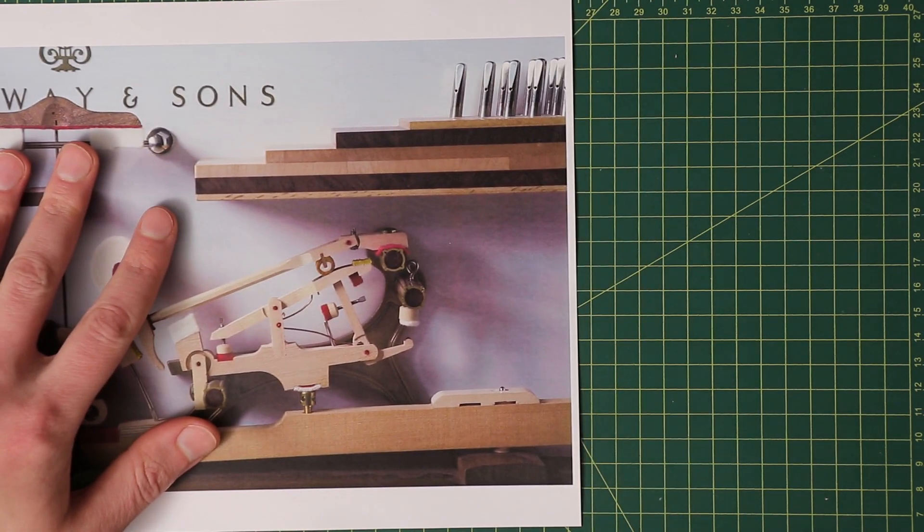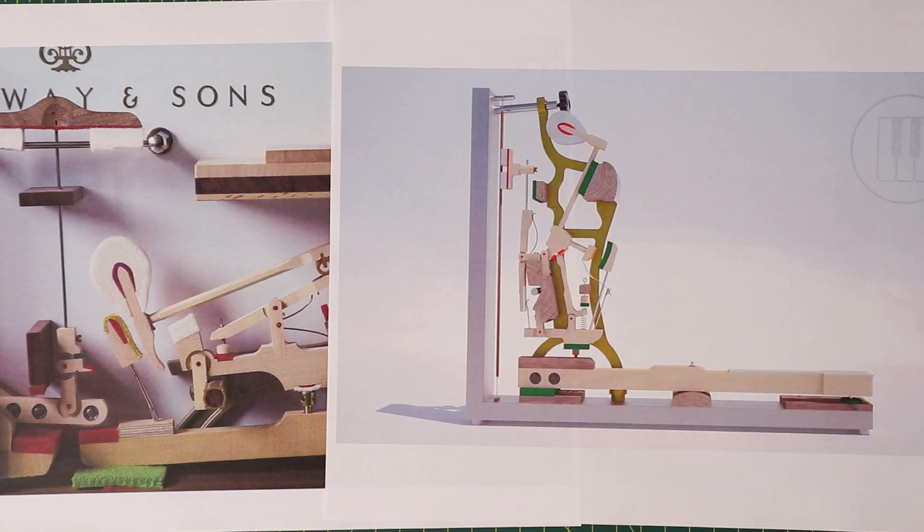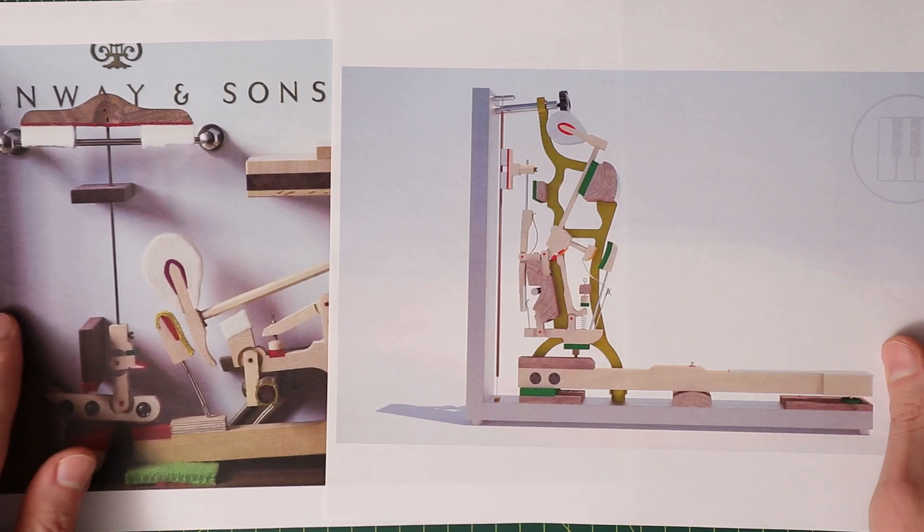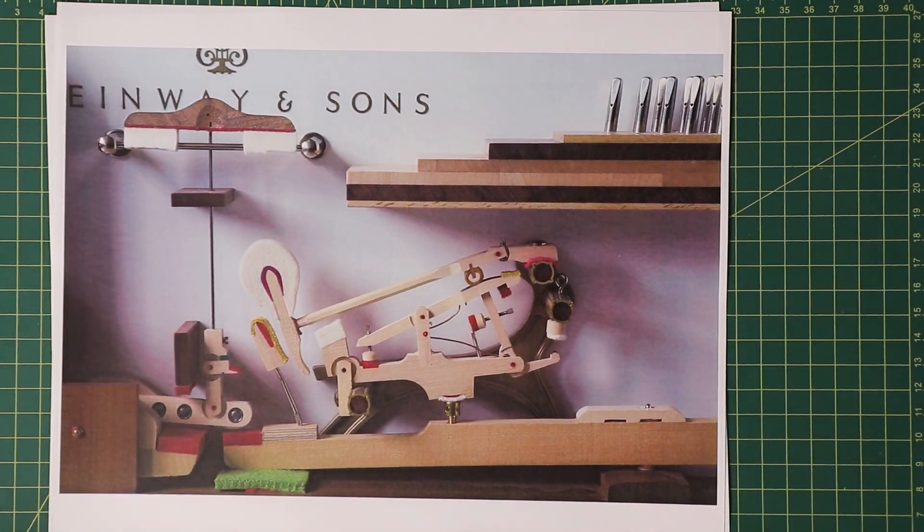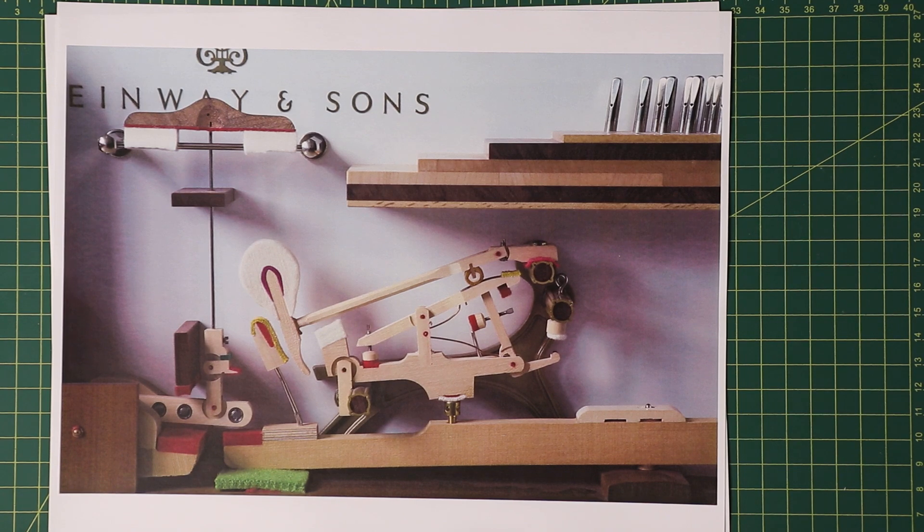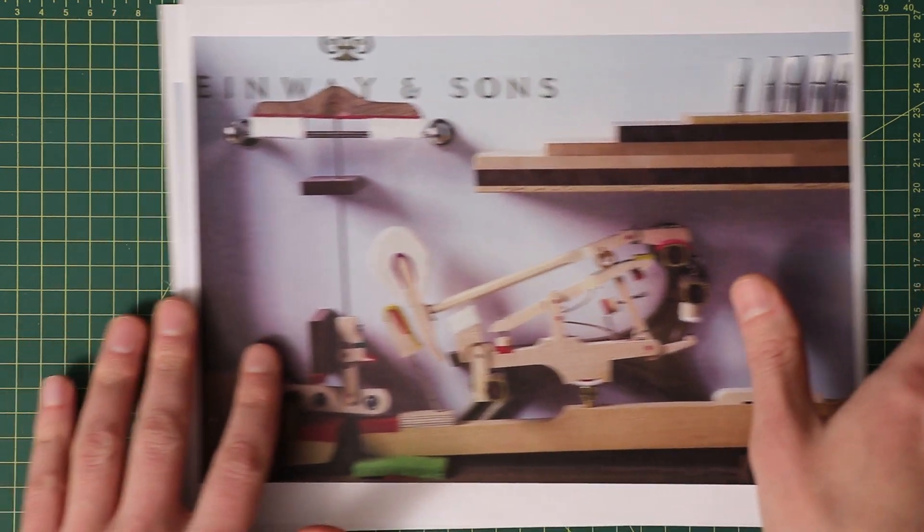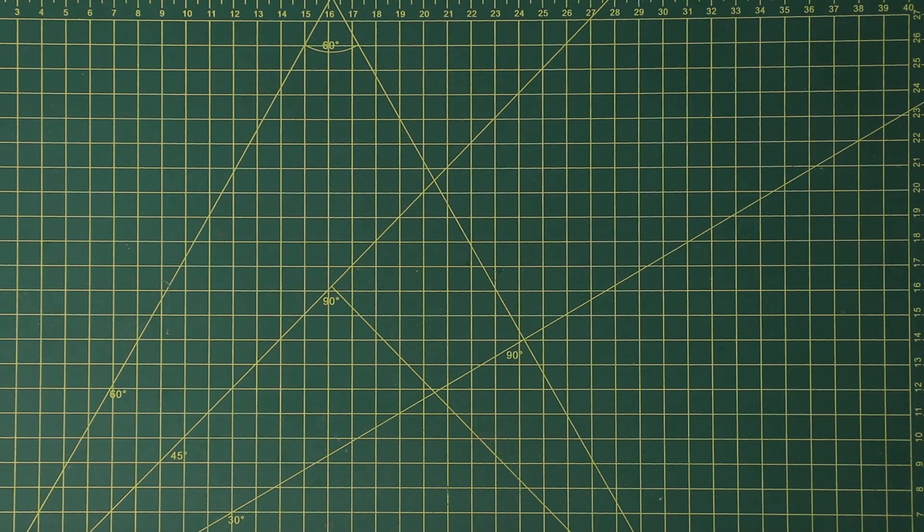With upright pianos also featuring a similar mechanism, though naturally redesigned extensively as it can no longer make use of gravity to reset the hammers. This double escapement action is also what you have in super high-end digital pianos or hybrid pianos, which are essentially a midi controller attached to a fully operational acoustic action with perhaps the strings either dampened for silent operation or simply not part of the package for a fully digital piano.